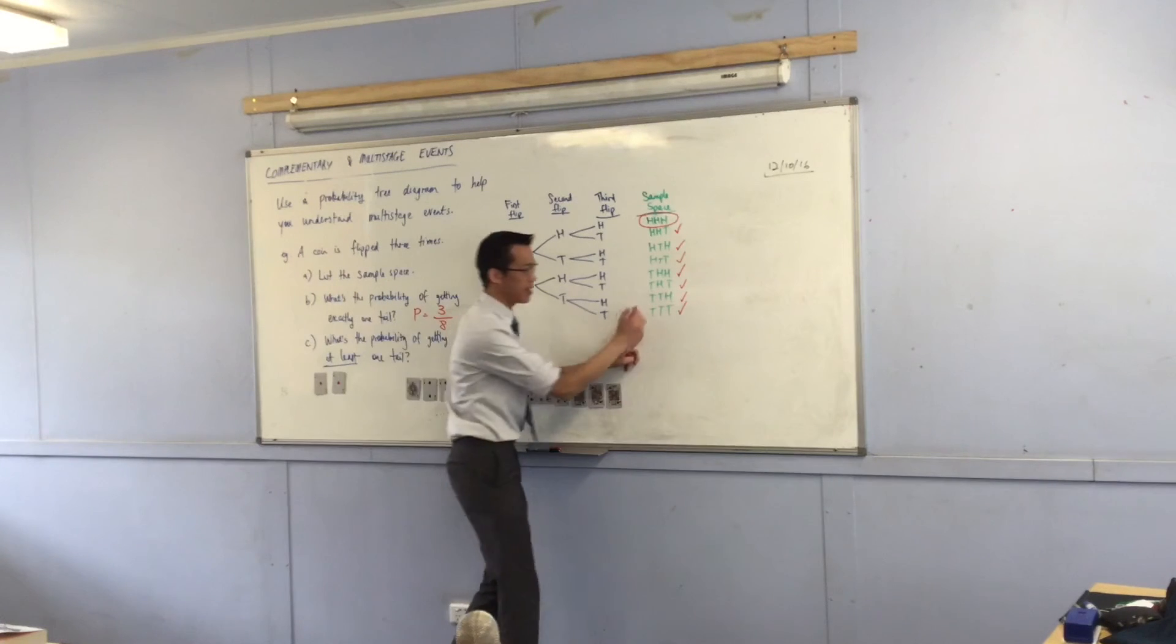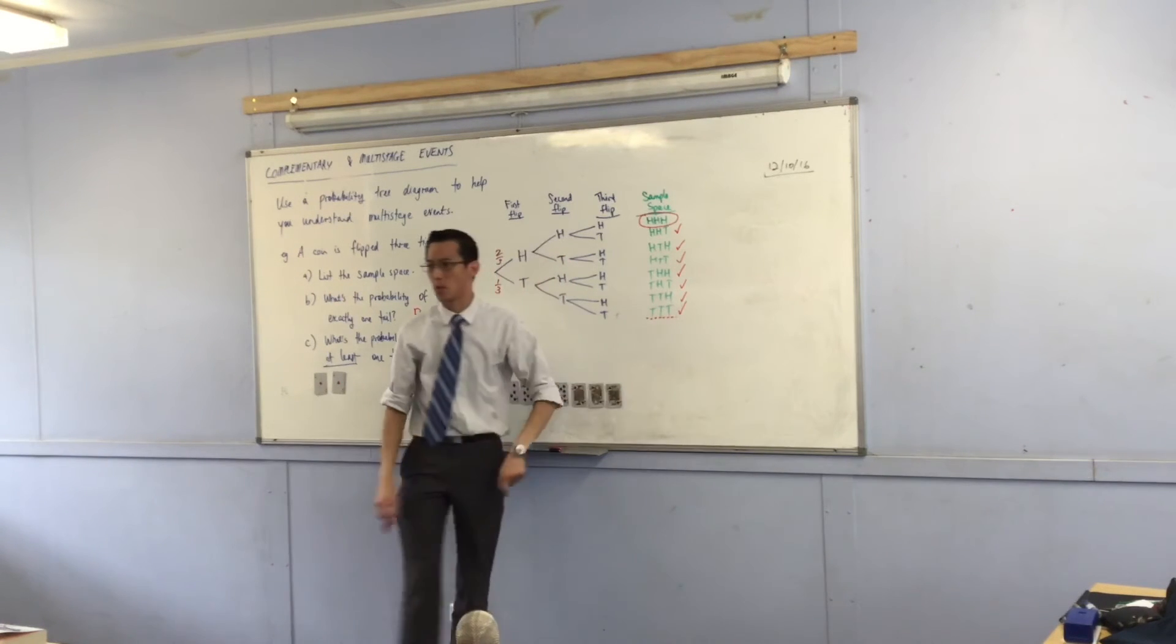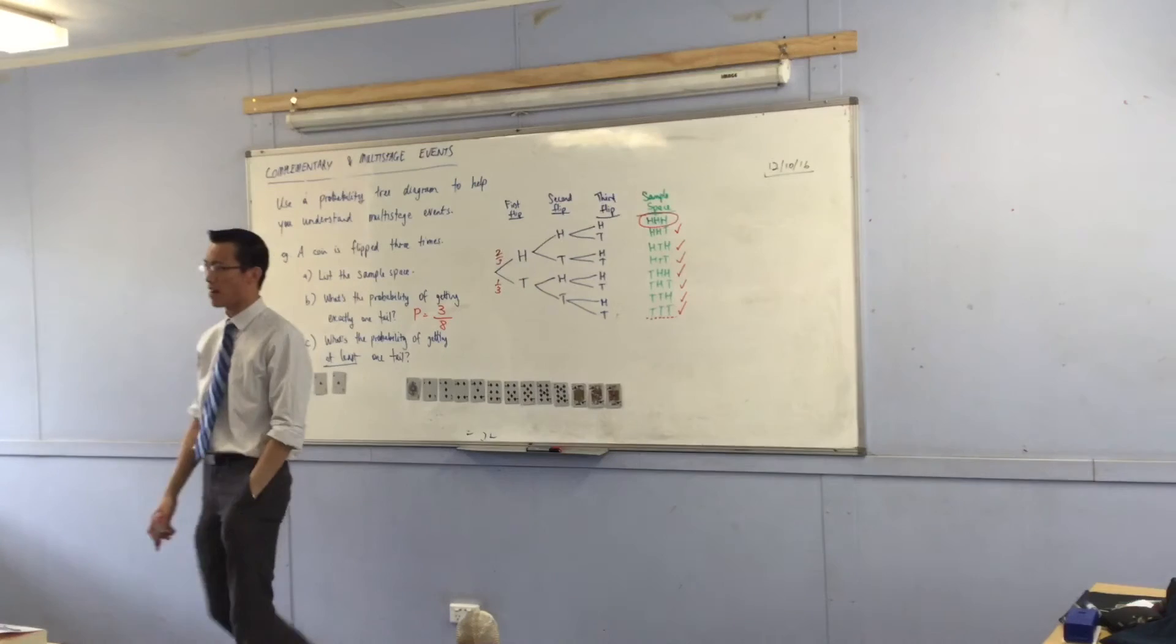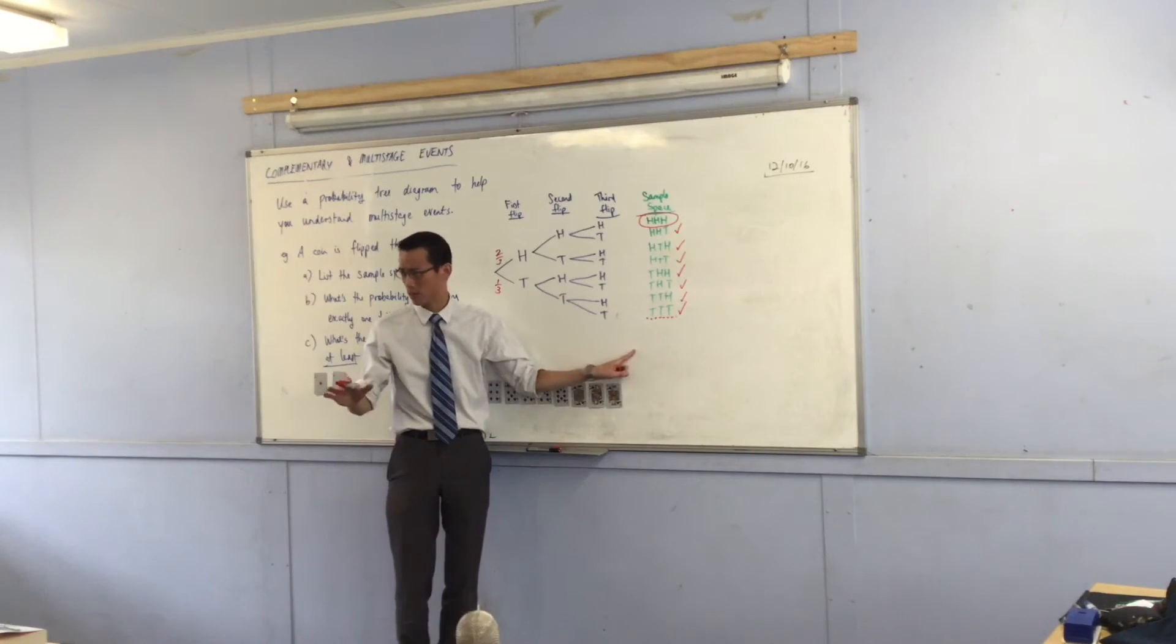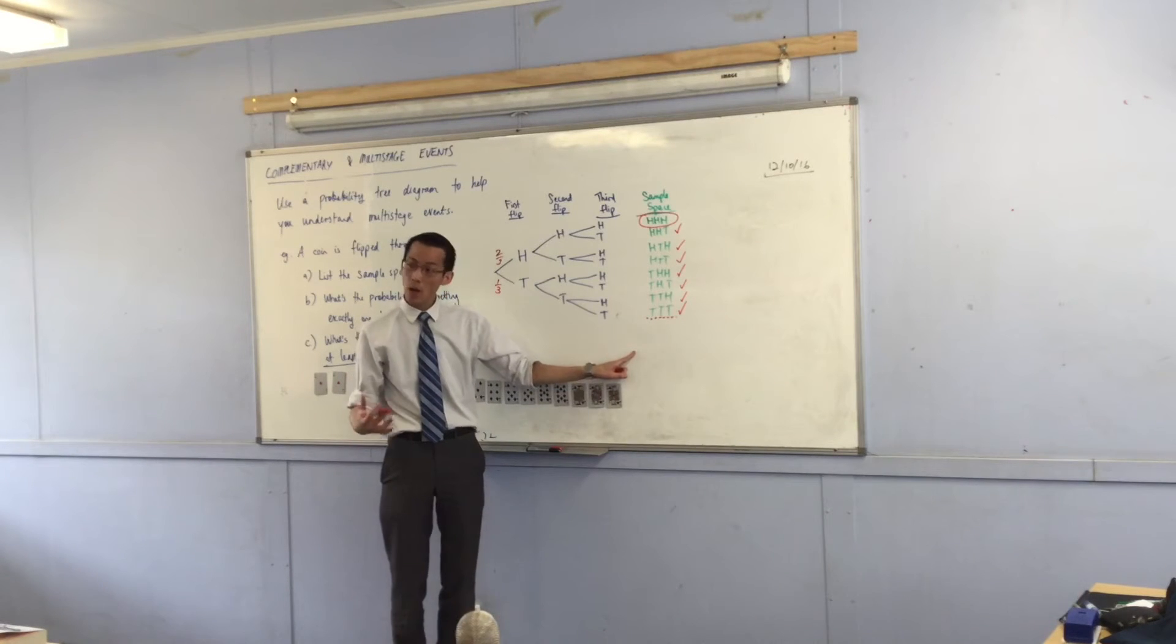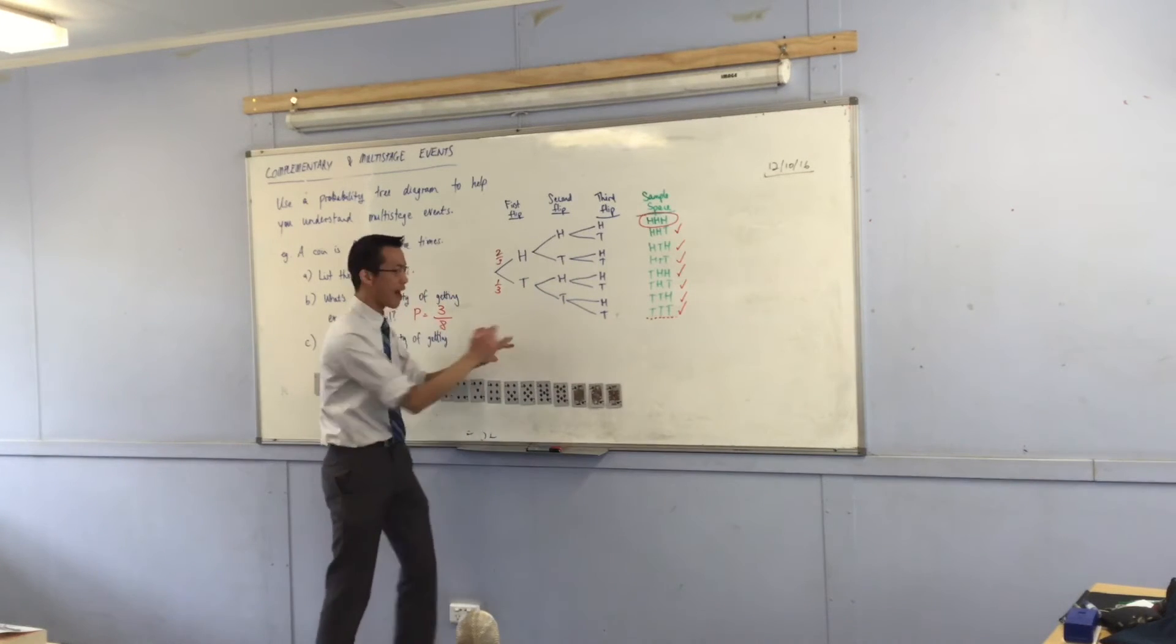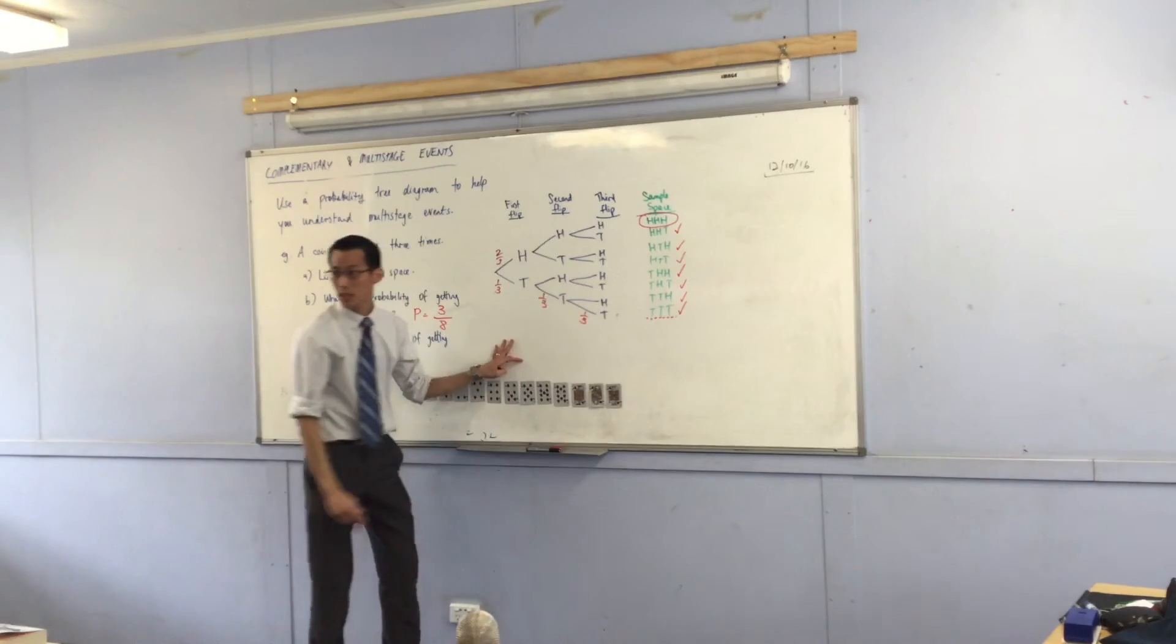this guy here, this isn't going to be one out of eight anymore, is it? Because it can't be. They're not all the same chance. In fact, that's the most unlikely thing to happen. Do you agree with that? How do I work out the probability of this on my unfair coin? What am I going to do?